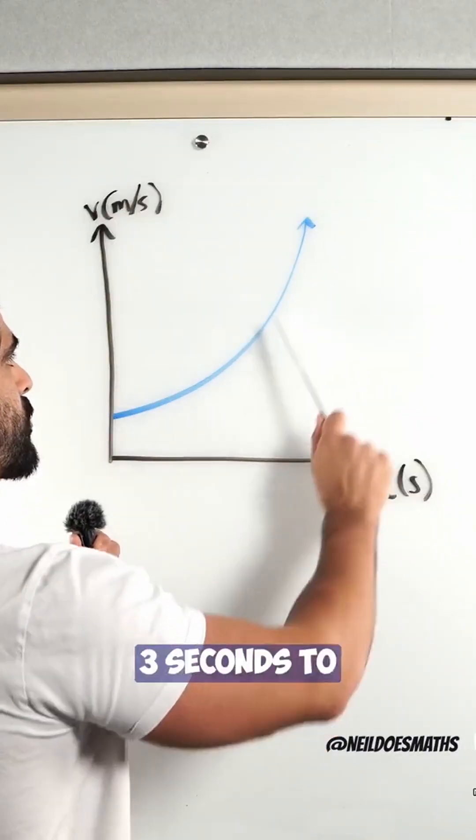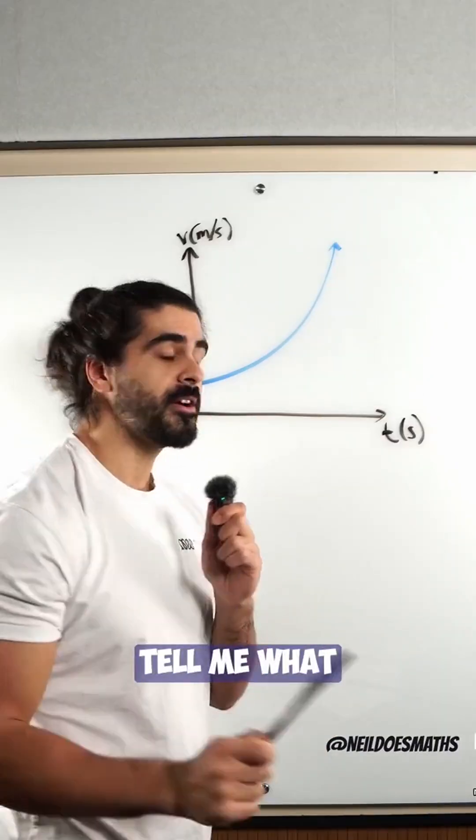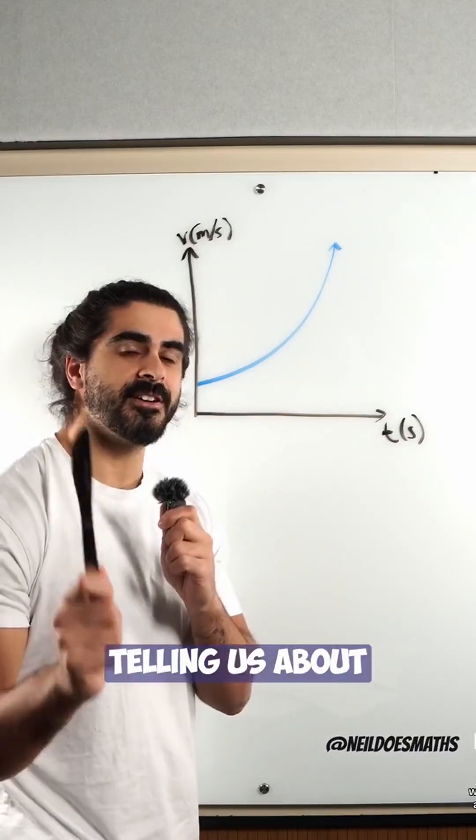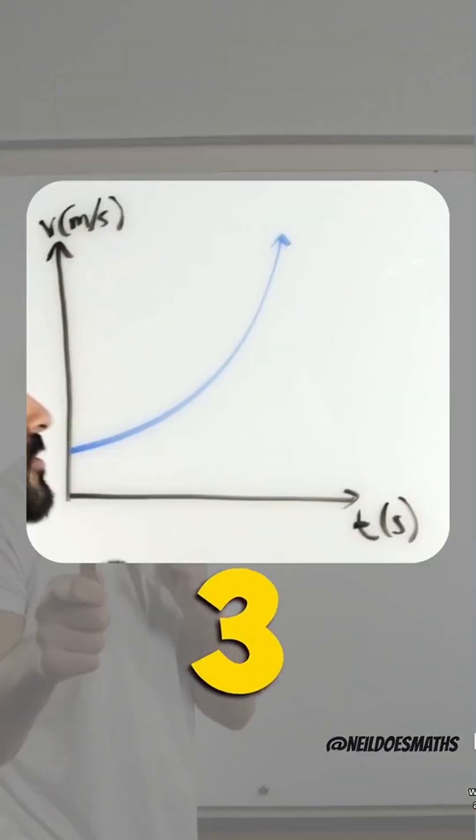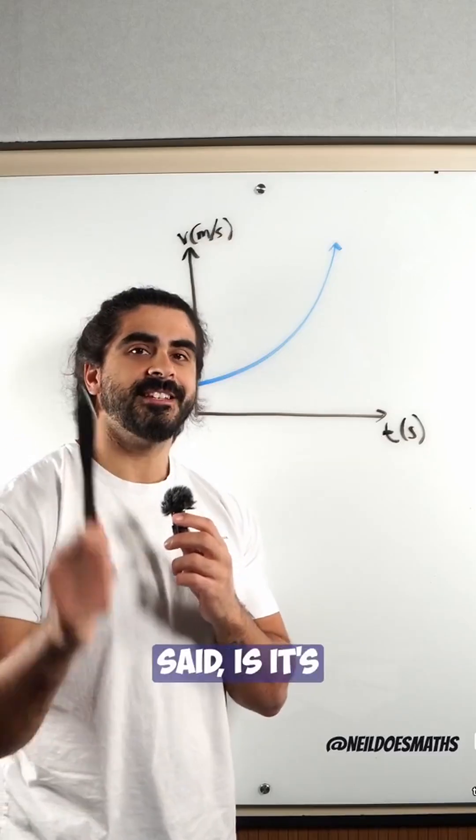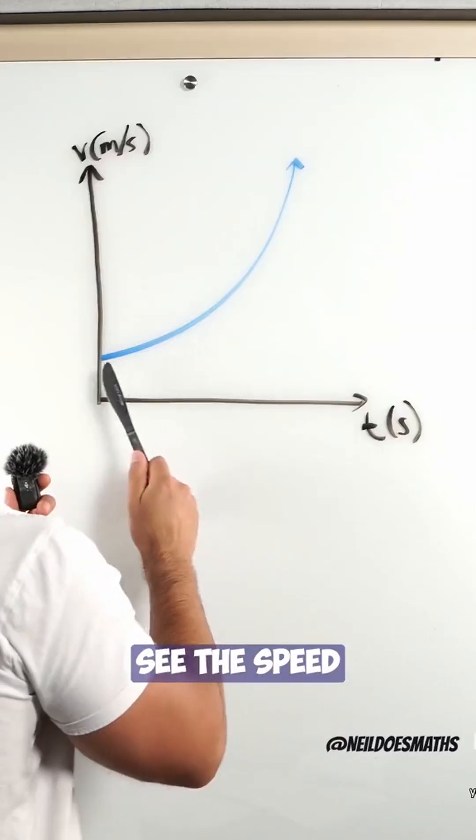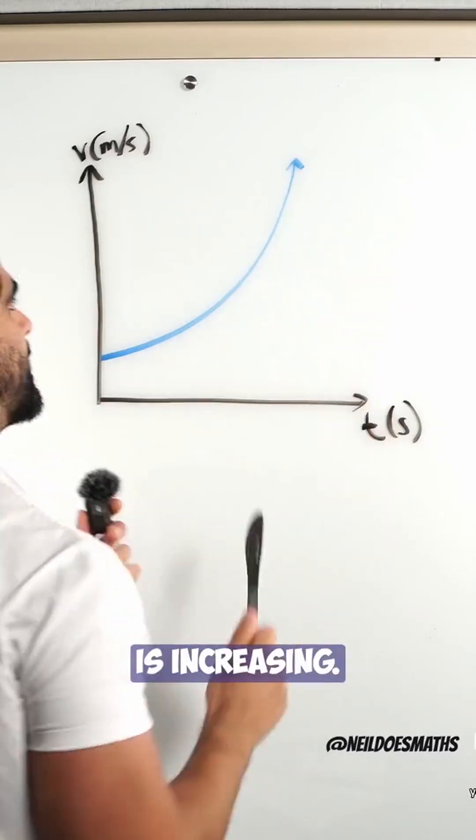Now, you have three seconds to tell me what this diagram is telling us about the motion of the car. The answer you should have said is it's accelerating. You can see the speed of the car increasing.